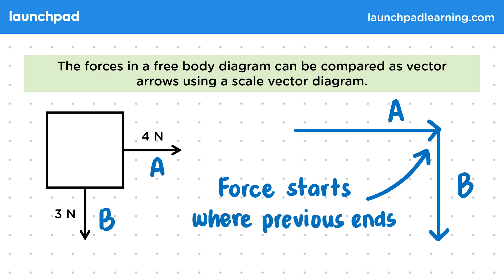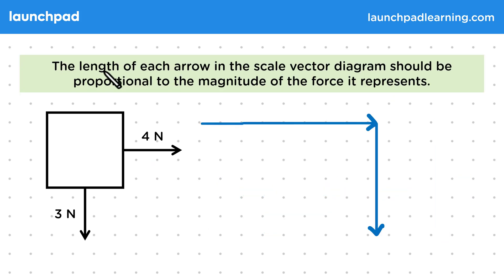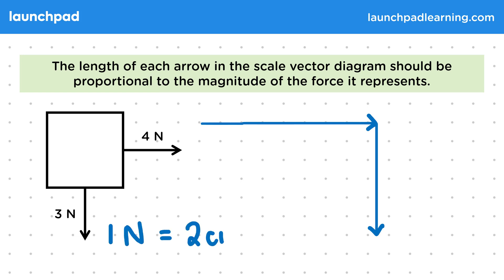But how long should we draw each arrow? The length of each arrow in the scale vector diagram should be proportional to the magnitude of the force it represents. Remember that the length of a vector arrow represents its magnitude, so we need to choose a suitable scale for the diagram so that it takes up most of the page but is also easy to convert. In this example, we've chosen 1 newton to equal 2 centimetres.